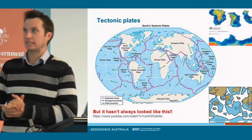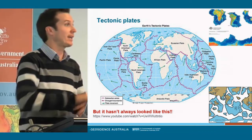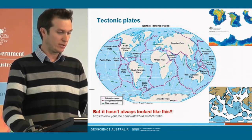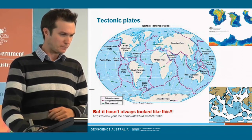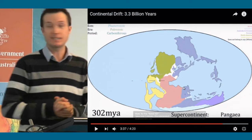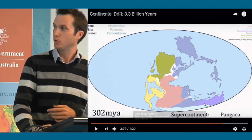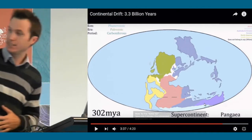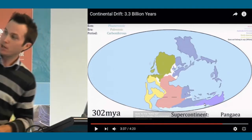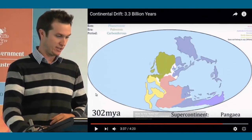The cool thing about plate tectonics is that it hasn't always looked like this, and we can use various lines of evidence to back-calculate what happened to the plates in the past and how they've come to form their current configuration. Here's a reconstruction from around 300 million years ago to the present. See if you can track what's happened to Australia — it starts down here as the purple area. At 300 million years ago all the continents were joined together forming what we call Pangaea, and the southern part of Pangaea is called Gondwana.